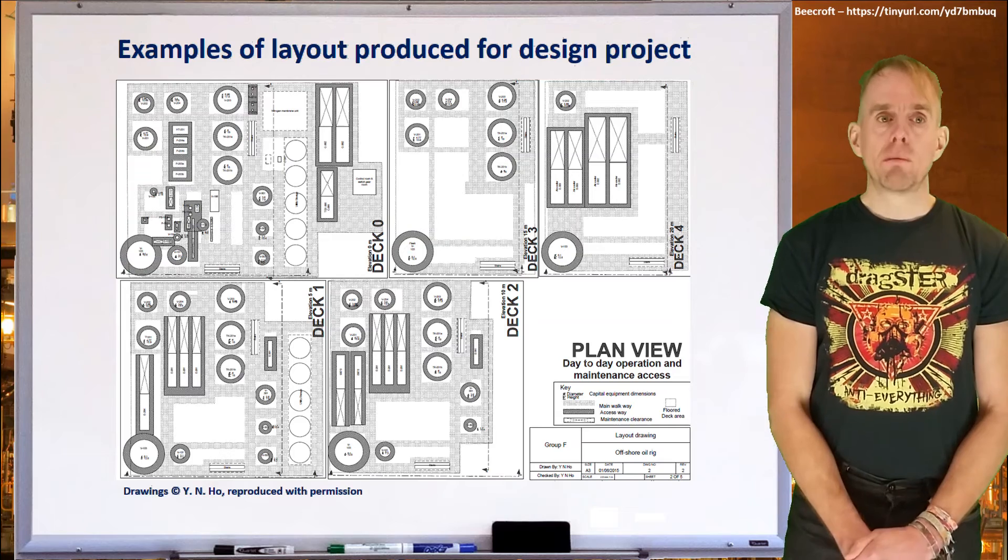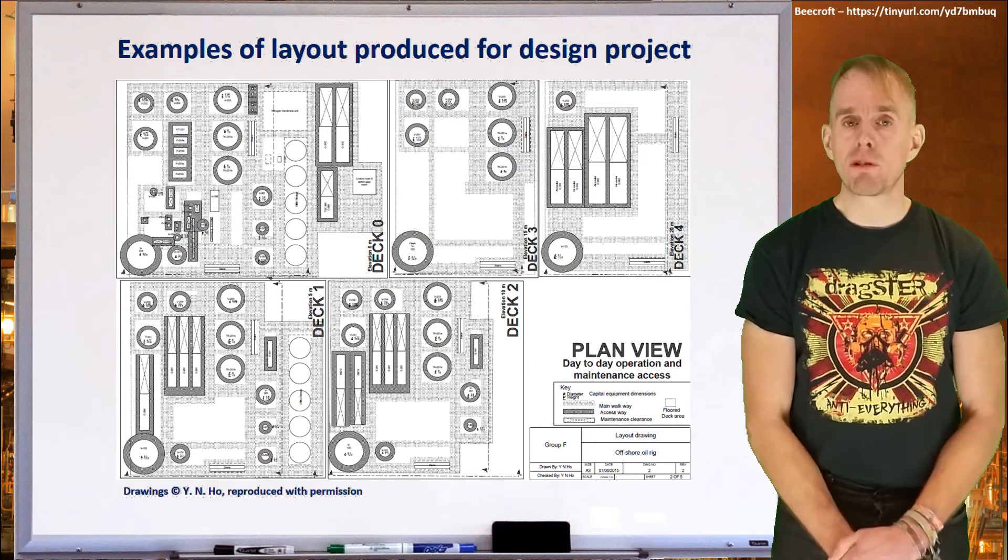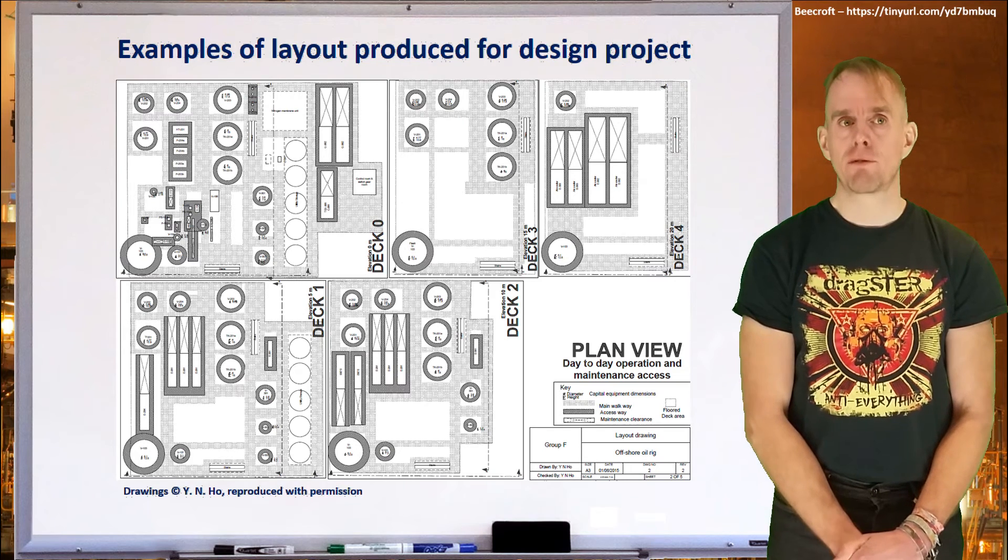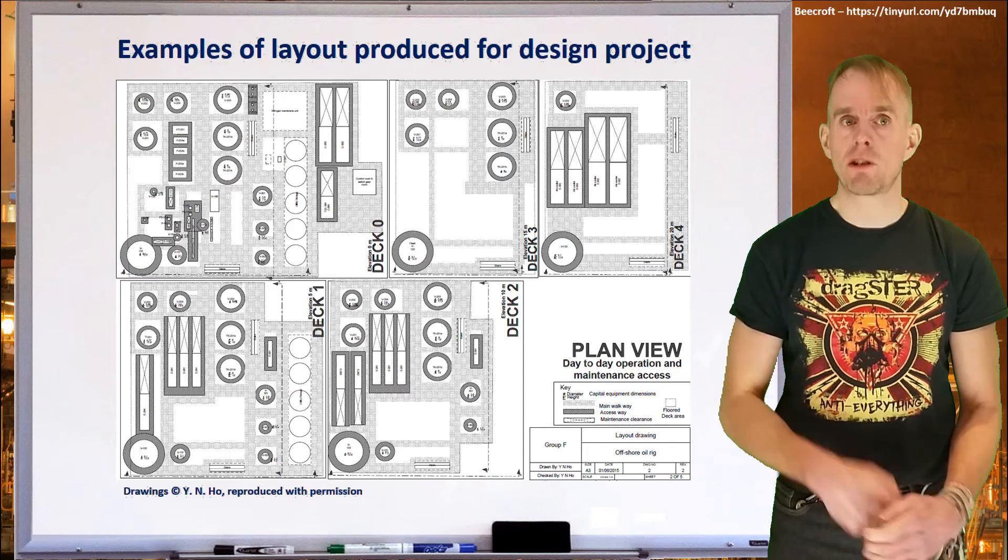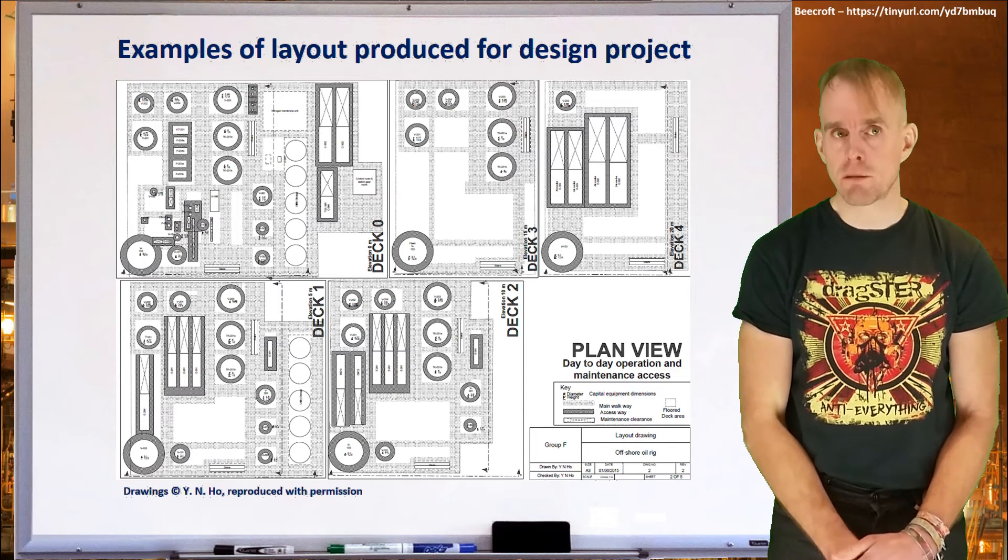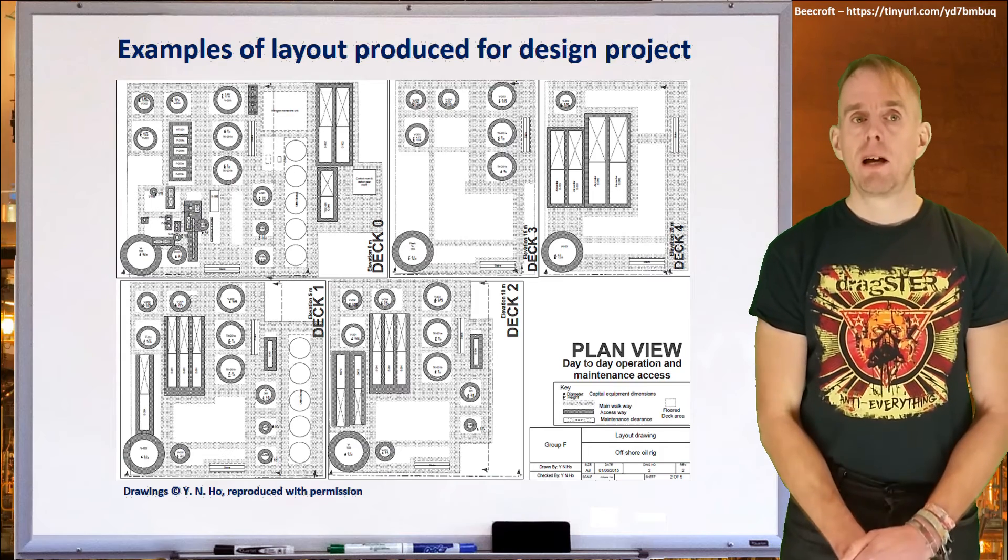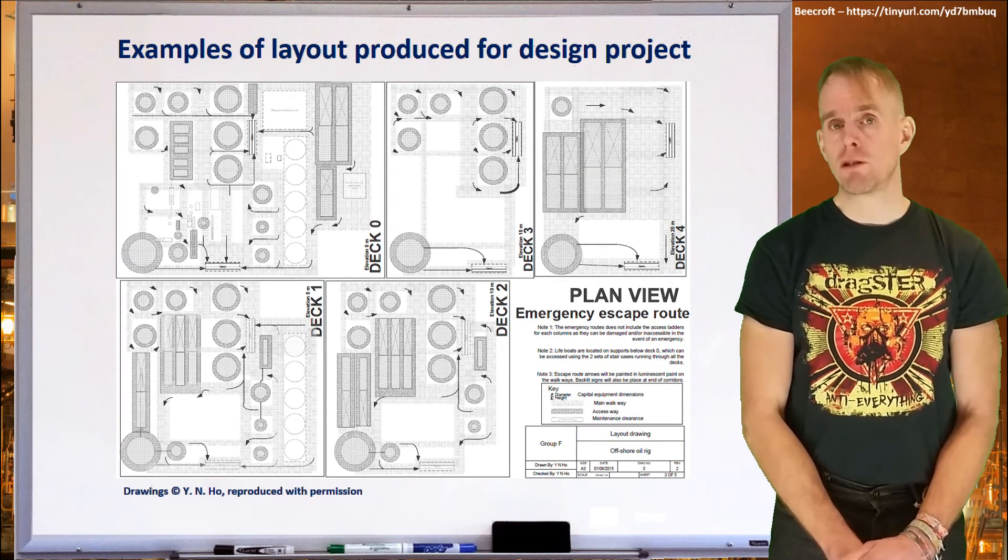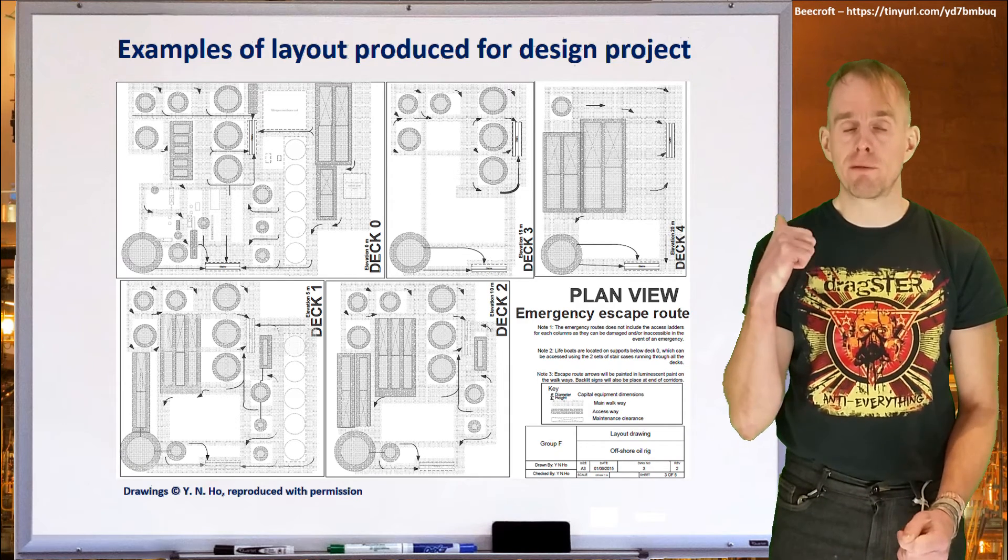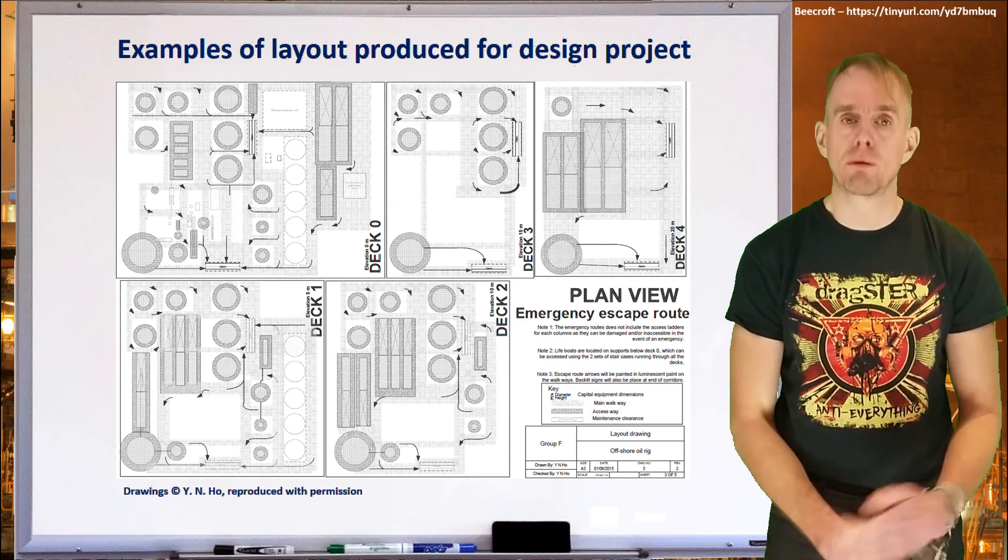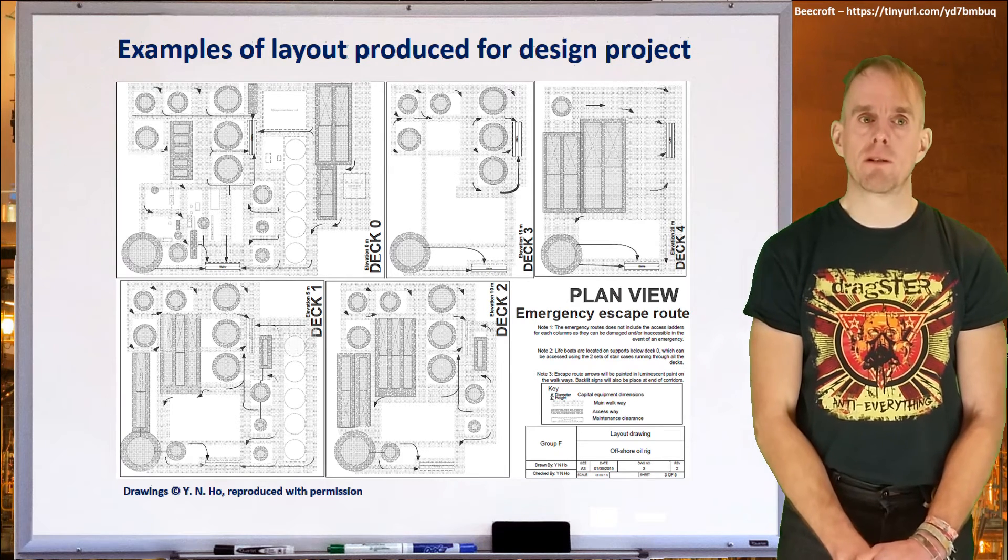Another plan view will give you exclusion zones around items of equipment for day-to-day operation and will also indicate the space that you've left for maintenance. Look at the crosshatch zones in some of these areas which indicate space where heat exchange bundles are going to be pulled out and removed from. Another plan view will give you emergency escape routes and emergency access, and these have been thought about very carefully and adhering to those rules of thumb and those pieces of legislation that we've discussed in earlier parts of this lecture.